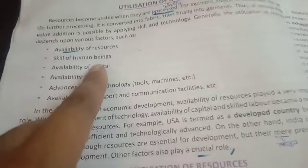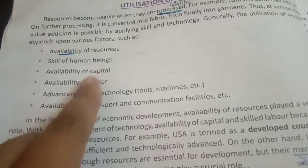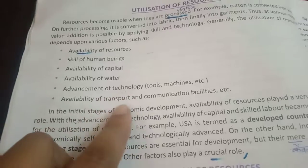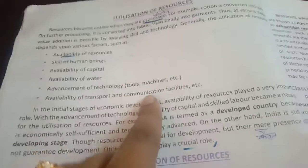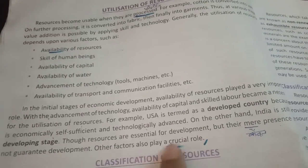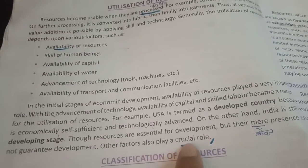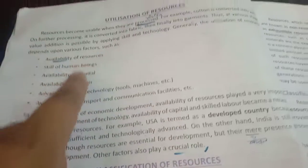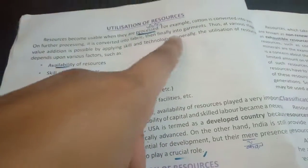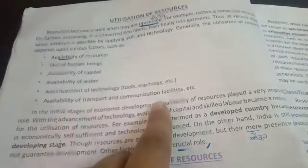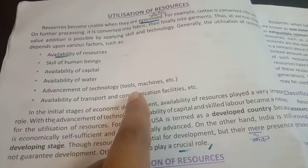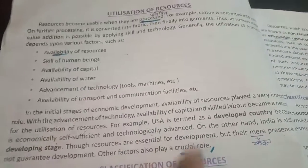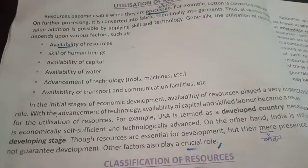Resources are essential for development, but their mere presence does not guarantee development. Other factors also play a crucial role — human beings, capital, water, technology, transport, and communication are all important for development. We need to use and develop these resources with the help of all these factors.